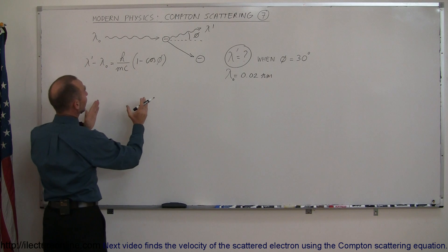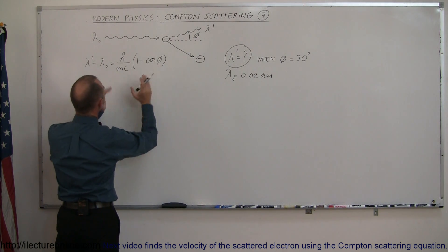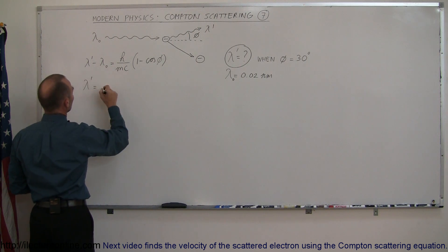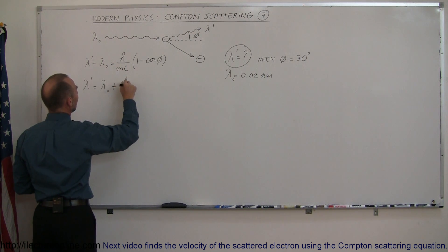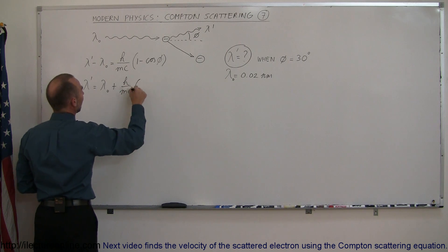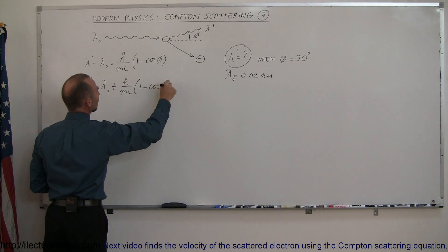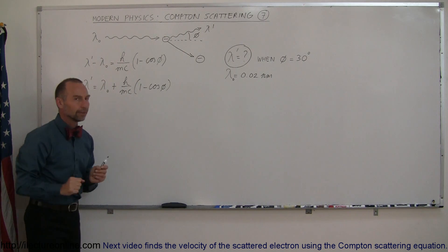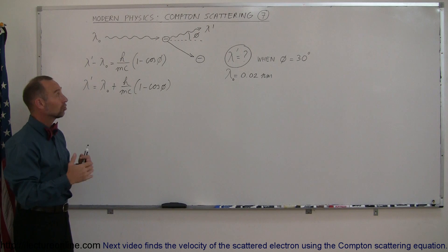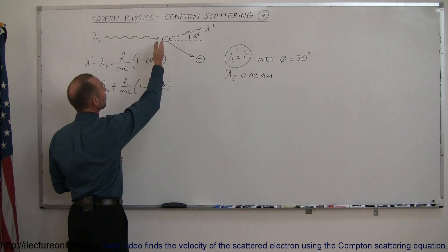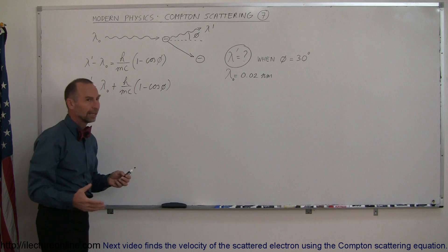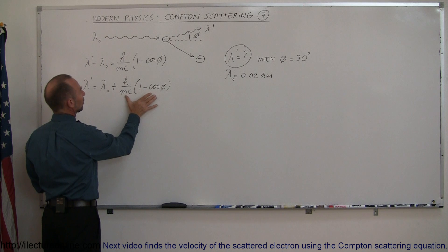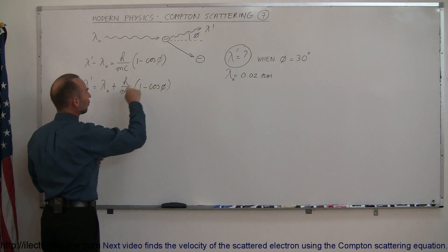First, we calculate what this equals. The final wavelength is equal to the original wavelength plus h over mc times one minus the cosine of phi. Notice that it'll be greater than the original wavelength. Greater wavelength means less energy, so there's some energy loss, and that energy loss is imparted on the electron, which will shoot off in some direction with some velocity. Let's calculate what this equals.